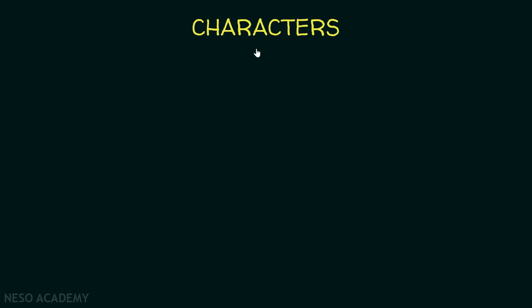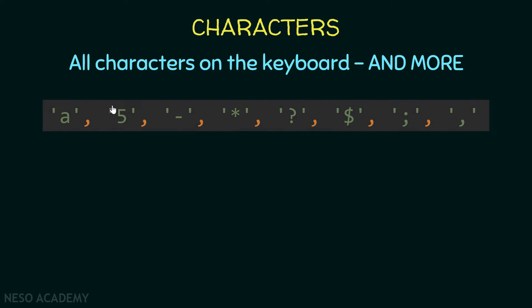Now let's talk about characters. Characters are all the characters on the keyboard and more. Here are some examples. All you have to do is write a character and put it between single quotes. For example, we are putting the number 5 between single quotes, so now it is a character. But if you put it inside double quotes, it will be a string. Characters are different than strings. We also have the minus sign, the asterisk, the question mark, the dollar sign, the semicolon, and even the comma. Everything on the keyboard can be a character, and we have more that we will talk about later.